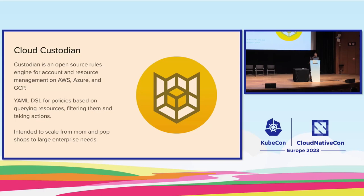You can chain these filters together in arbitrary ways and then take a set of actions — things like stopping an instance, taking a snapshot, or changing its role or security groups. You can combine filters and actions to create arbitrary policies targeting security, better operations with automatic backups, or cost optimization for underutilized resources. Additionally, it binds into event-based execution, so as API calls happen in your cloud provider, you can introspect those calls and check if resulting resources are compliant with your policies.